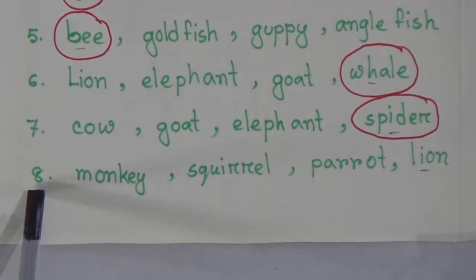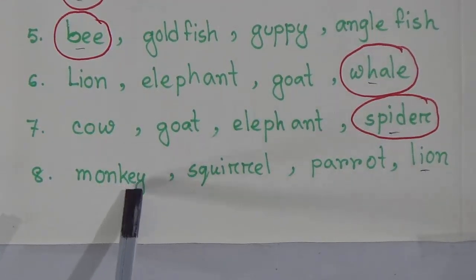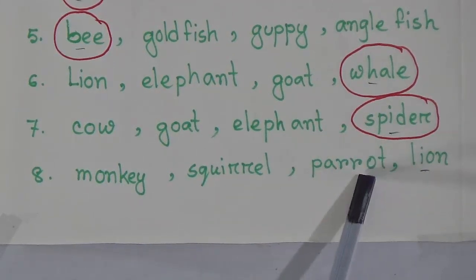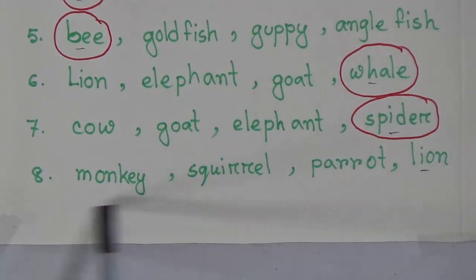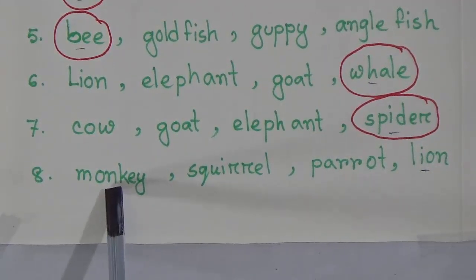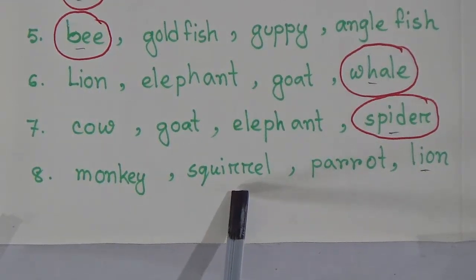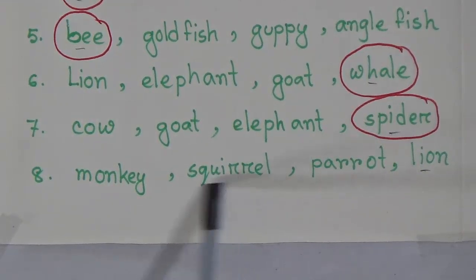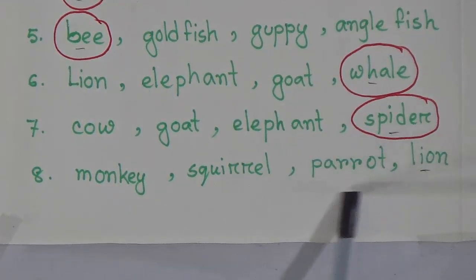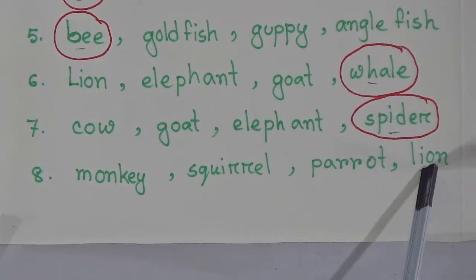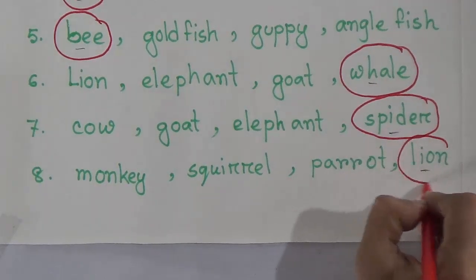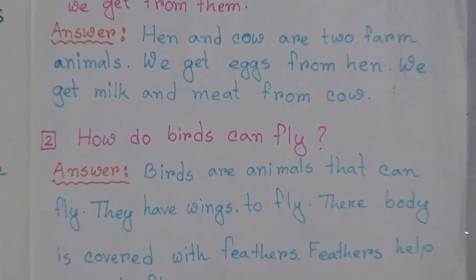Our last odd one out is: monkey, squirrel, parrot, lion. Monkey lives in the trees, squirrel also lives in the trees, and parrot also makes its home in the trees. But lion lives in the cave, so lion is the odd word here. Dear students, we have finished the odd one out section. Now we will go to the question and answer.